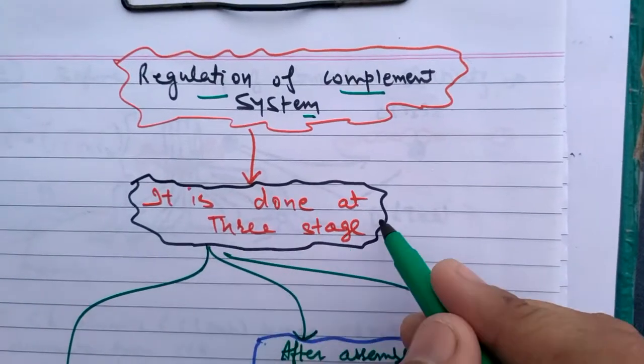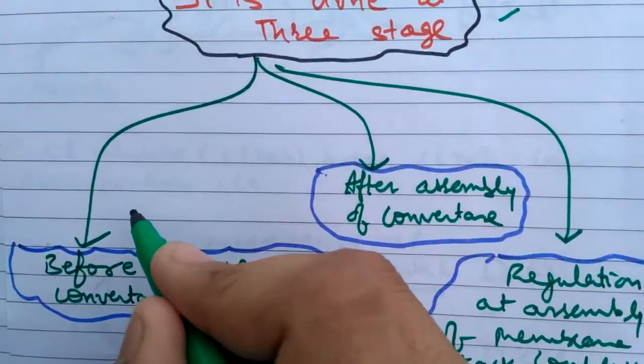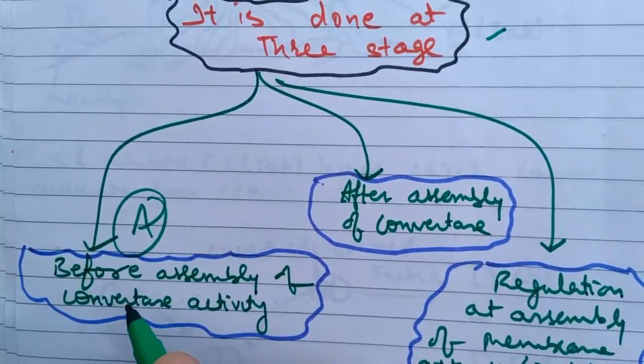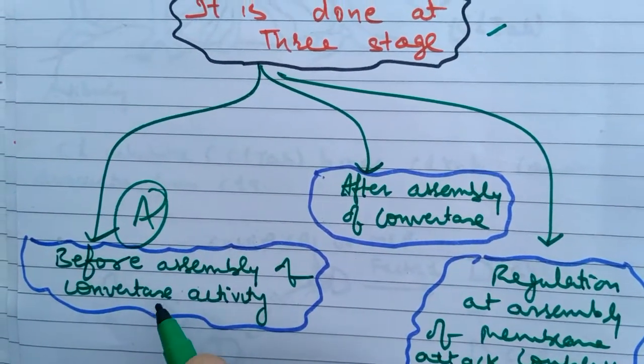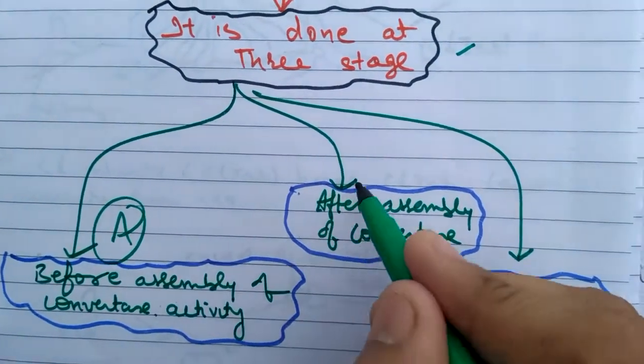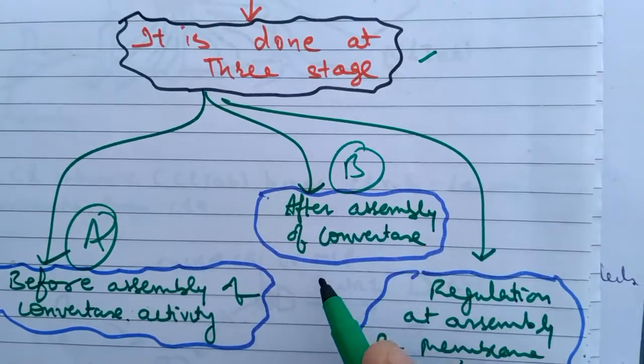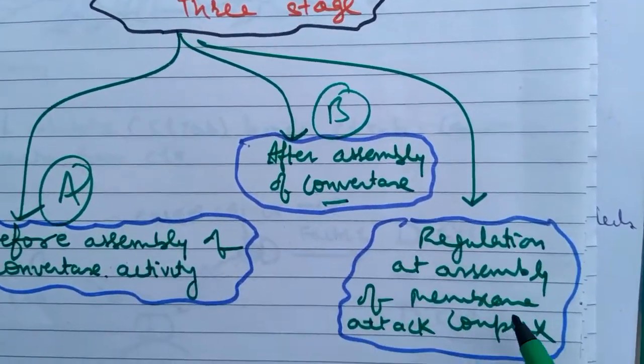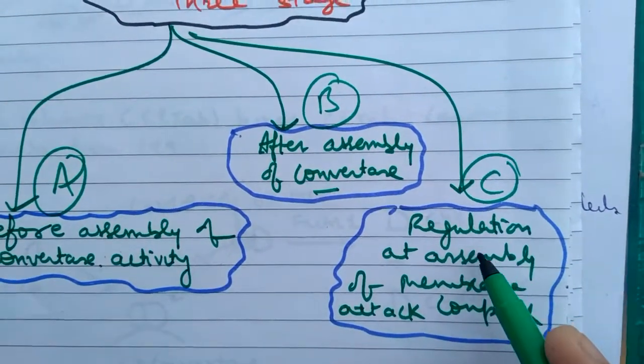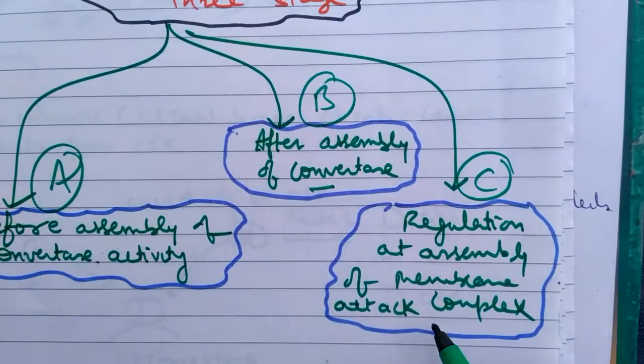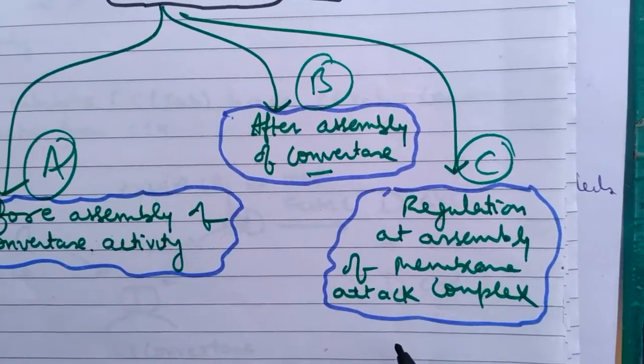It is done at three stages. First stage is before the assembly of convertase activity, second is after assembly of convertase, and third is regulation at assembly of membrane attack complex, i.e. MAC.